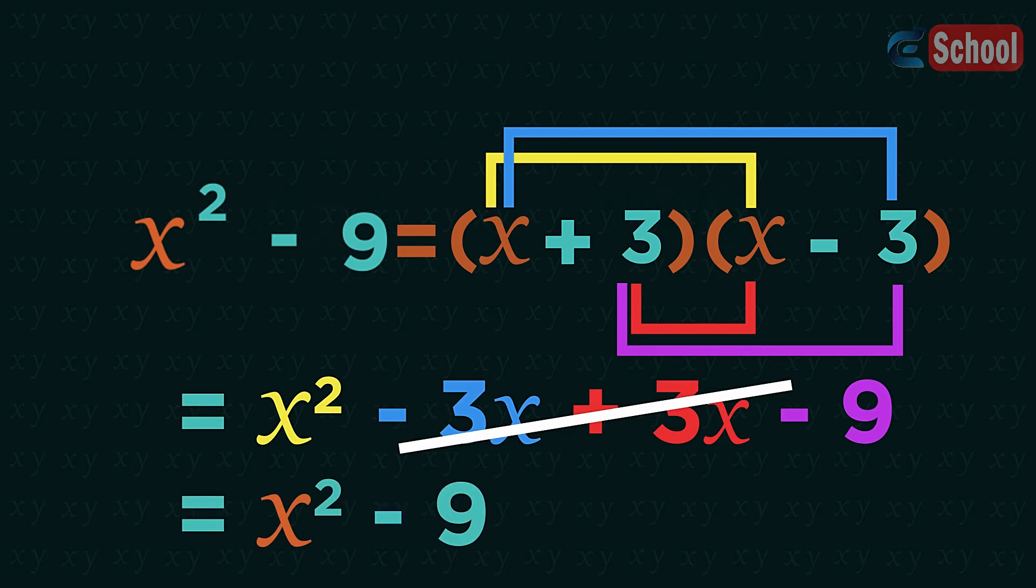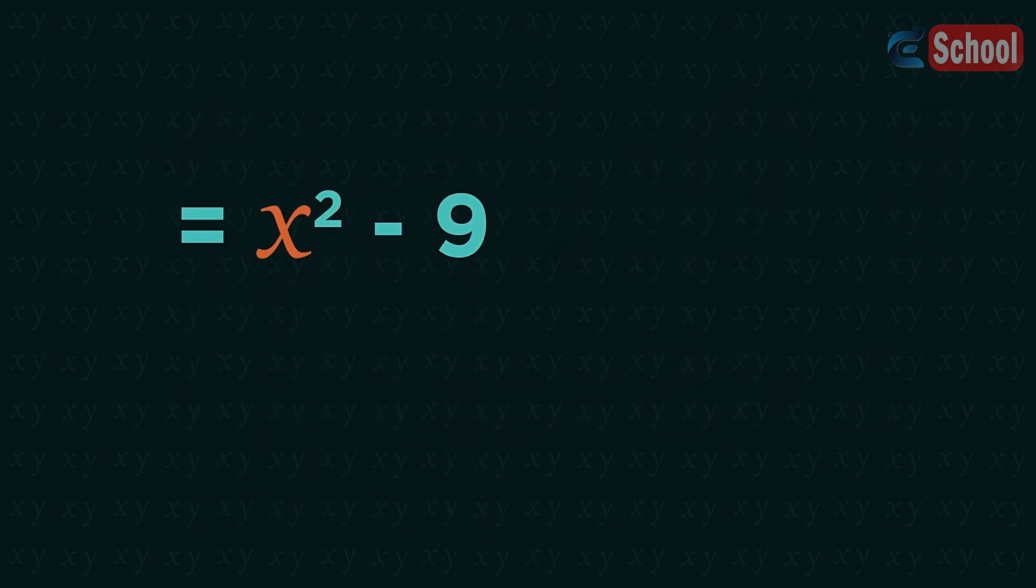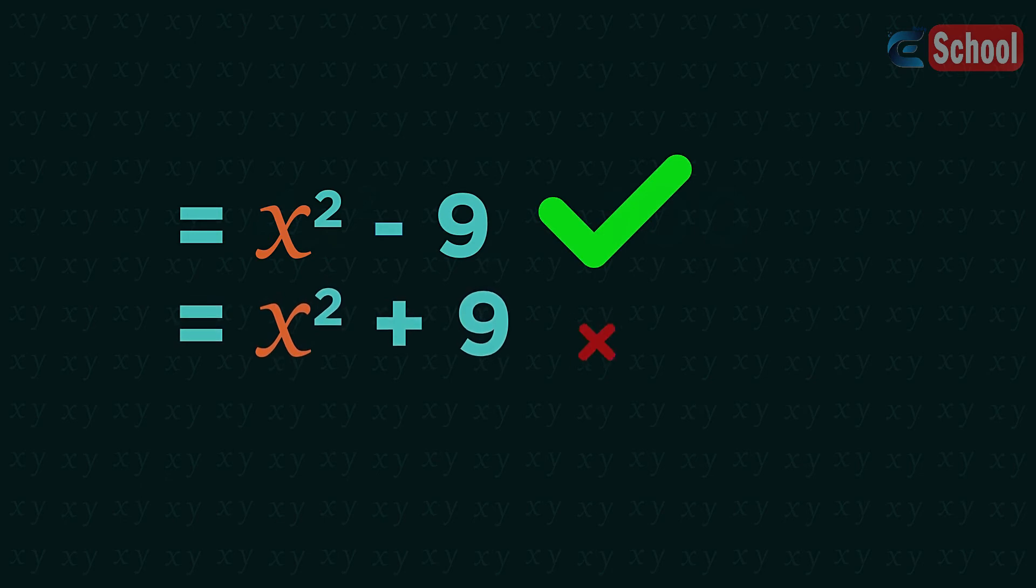One key thing to know is that we can only factorize like this when it's an x squared minus a square number. It must be a minus, not a plus.